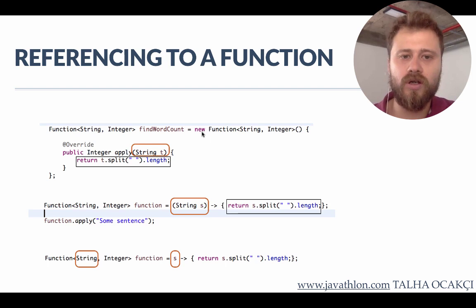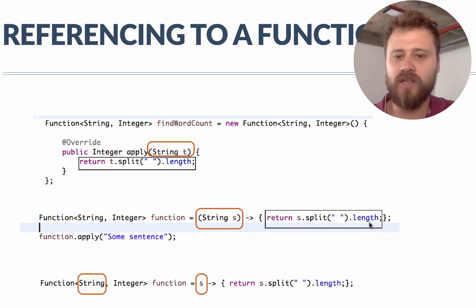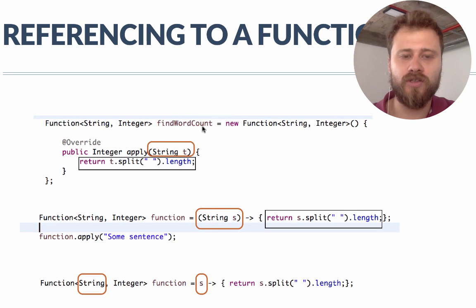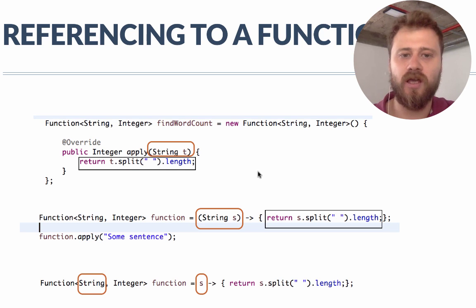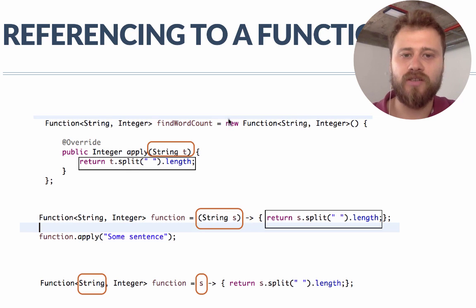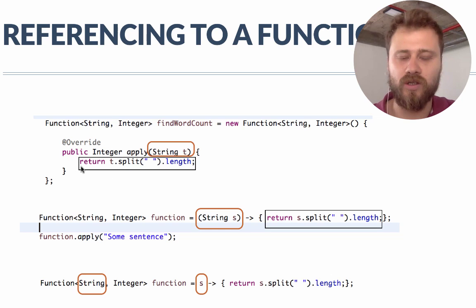Now let's convert our functions into lambda expressions. We have developed this function before — it finds word count and simply finds the count of words by splitting the sentence by blank characters. The input is a string and the output is an integer. This is again boilerplate code: the anonymous class definition, the abstract method definition, the override annotation, the input, and the execution. Lambda expressions shorten this code and remove all the boilerplate.